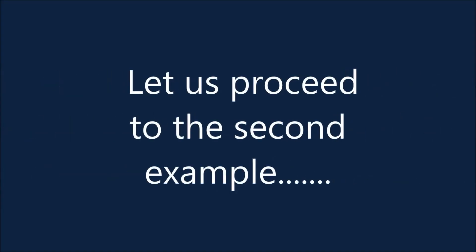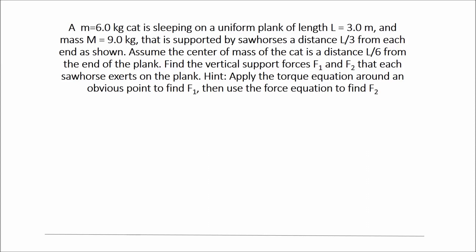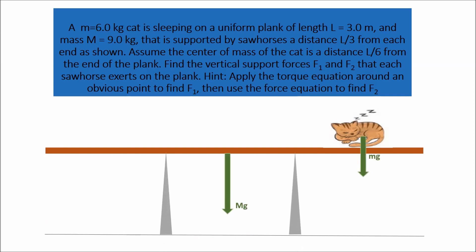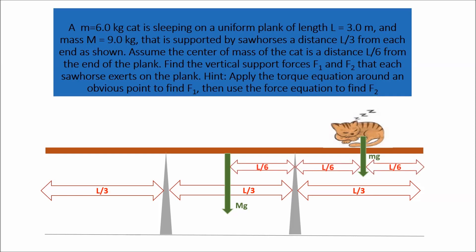Let us proceed to the second example. A 6 kg cat is sleeping on a uniform plank of length 3.0 meters, and mass 9 kg, that is supported by sawhorses a distance one-third length from each end as shown. Assume the center of mass of the cat is a distance one-sixth length from the end of the plank. Find the vertical support forces F1 and F2 that each sawhorse exerts on the plank.